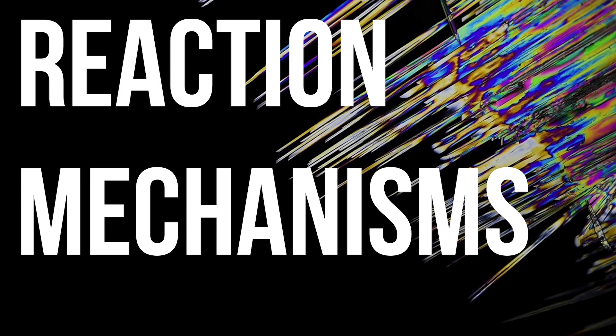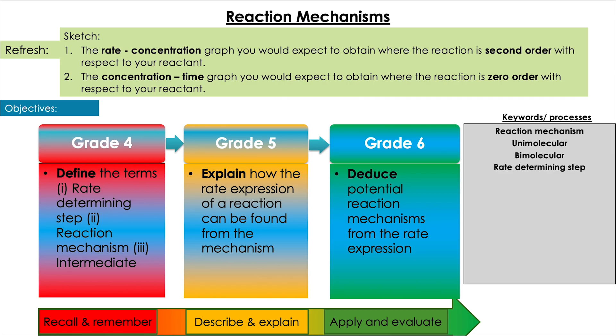Hey guys, welcome back to Pop'em Up Chem. In this video we're carrying on with Unit 6 and we're going to look at reaction mechanisms, building on what we've already done on rate expressions and how we can use those to predict reaction mechanisms and steps for how reactions occur. First though, a little summary question for rate concentration and concentration time graphs relating them to the order of reaction.